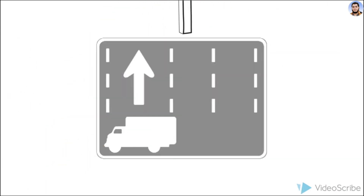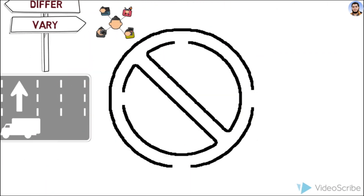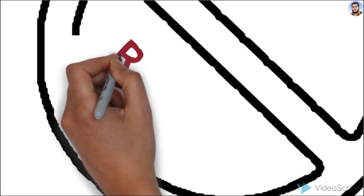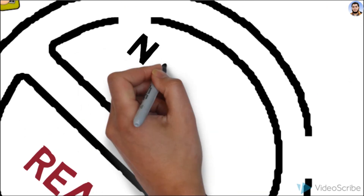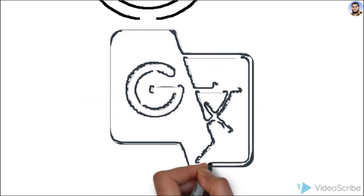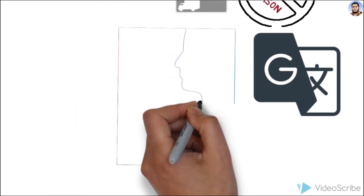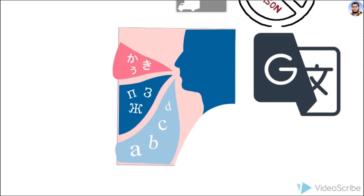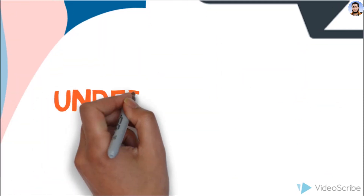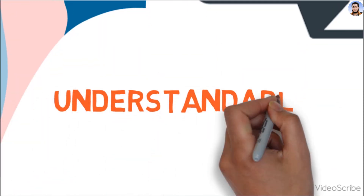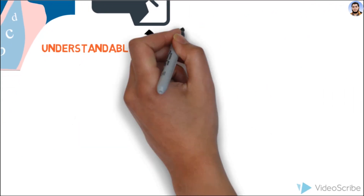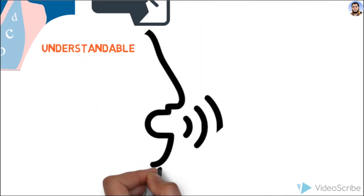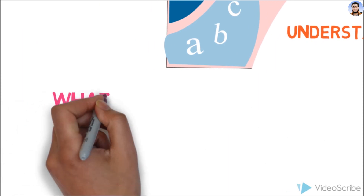اگر آپ نے machine language سیکھ بھی لی، تو وہ particular style دوسرے computer میں کام نہیں کرے گا۔ اسی وجہ سے ہم کوشش کر رہے ہیں کہ کوئی ایسا medium ملے جو ہماری بات کو computer تک پہنچائے اور computer کا response ہمیں understandable form میں دے — یعنی کوئی converter مل جائے تاکہ ہم computer سے آسانی سے communicate کر سکیں۔